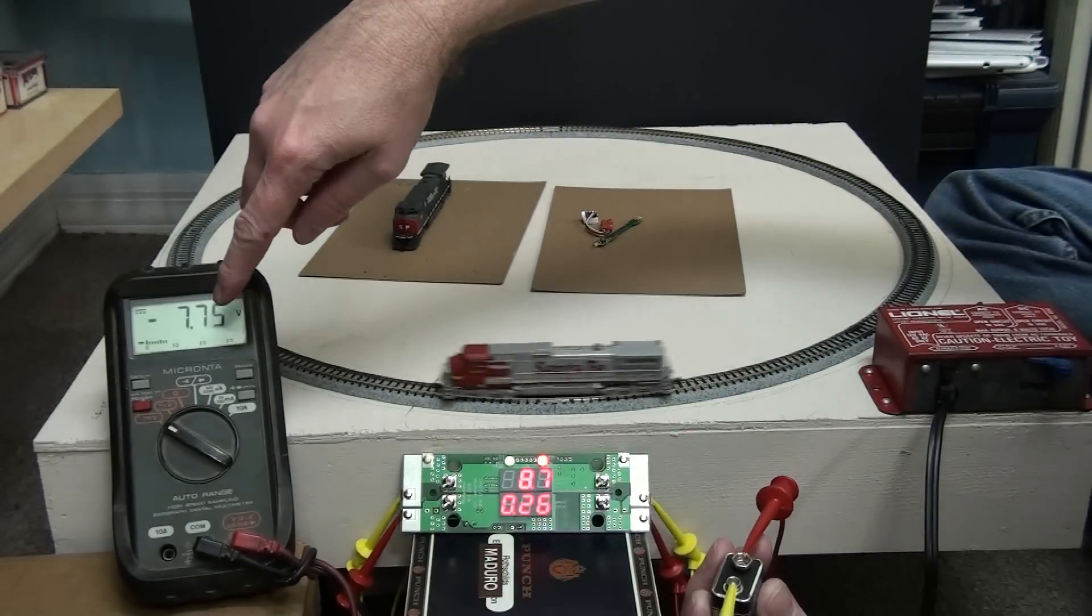So right now, this throttle's working the same as the old power pack we used to use. Now that I have this set up, you can see that I have the locomotive running at speed step 28, which is full speed for this.